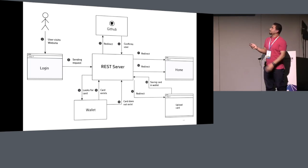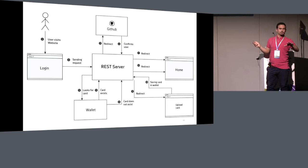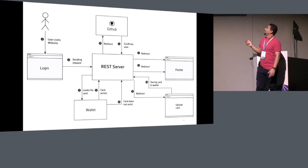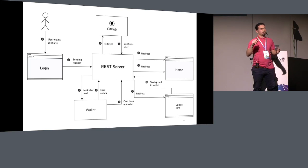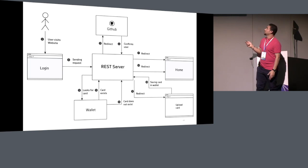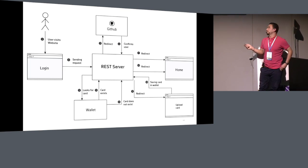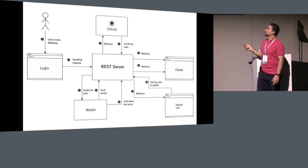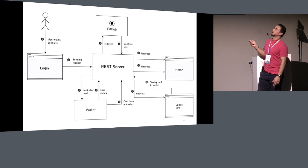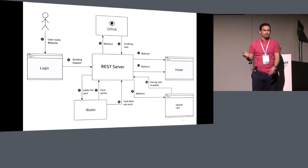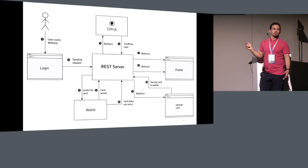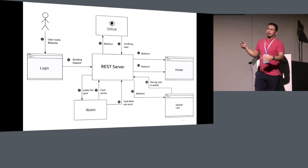First you go to the website, there's a login button where you click to log in, then you send the request to the REST server which is generated by the Hyperledger Composer tool. The REST server works in multi-user mode and authentication mode, so it needs to go to the wallet — a MongoDB Docker container — and look for a card for this user. If it doesn't find any card it redirects the user to a login service, which you can choose yourself: it can be GitHub, Google, Facebook, whatever.